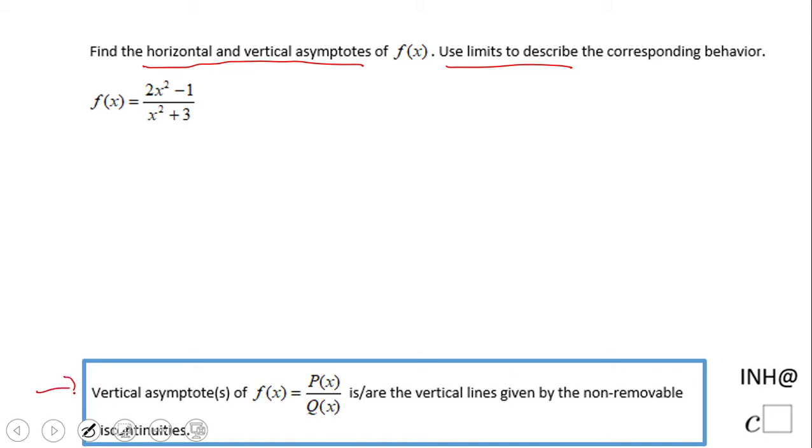First, let's take a look at vertical asymptotes. We have a rational function which is a quotient of two polynomials. How do we find the vertical asymptote? We're going to set up the denominator equals to zero. The vertical line is given by the non-removable discontinuity. That means set up the denominator equals to zero.